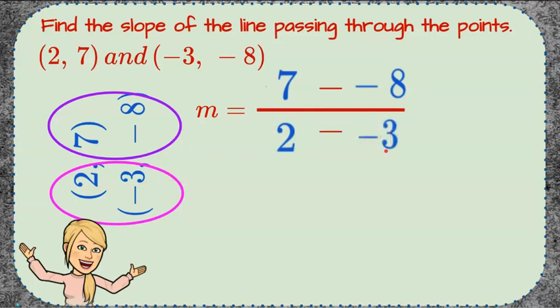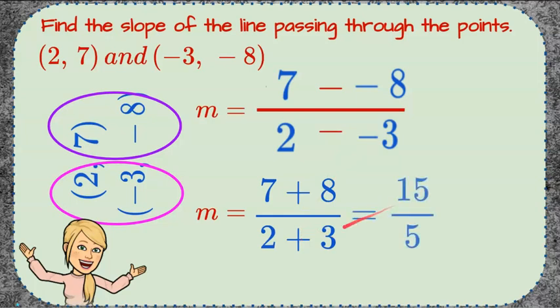So now we need to do the math. 7 subtract -8 is going to be add the opposite so add positive 8. Add the opposite so add positive 3. 7 plus 8 is 15 and 2 plus 3 is 5. 15 divided by 5 is 3. So the slope of our line is 3.